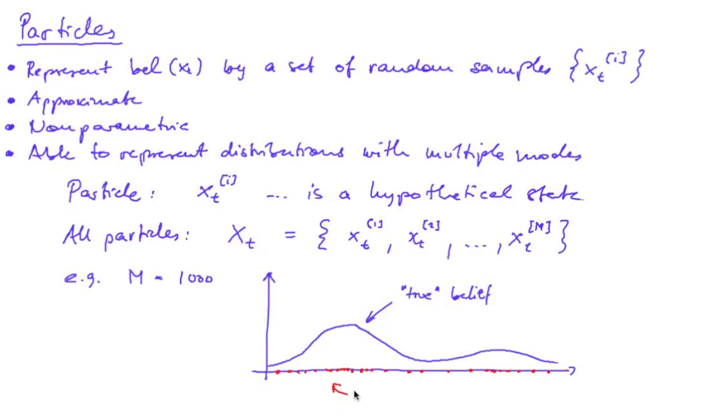So there should be many particles here. Now the density of those particles approximates our true belief. So now if you have a simple distribution and want to obtain the particles that represent this distribution, for example a normal distribution,